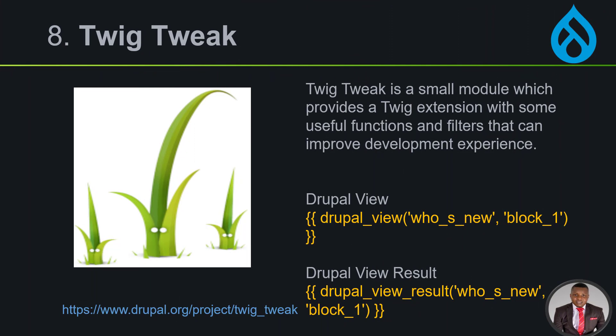The next one is Twig Tweak — it's a small module that provides a Twig extension with some useful functionalities to filter that can improve the development experience. If you're calling a view, you can use this straight up, or if you want to call a block and the likes, you can use this to get it into your front end. You can see some examples here for views, view results, and blocks.